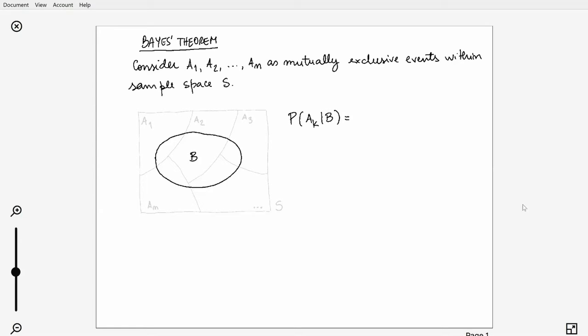you can get that probability by calculating the ratio between the intersection of the probabilities and the probability of B.